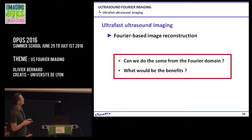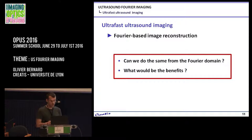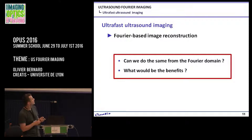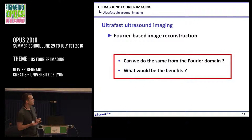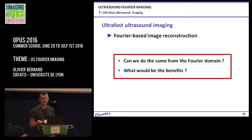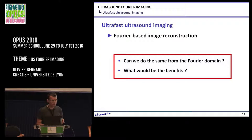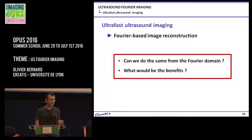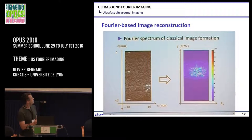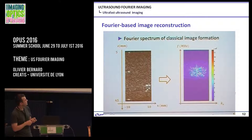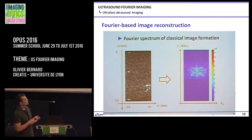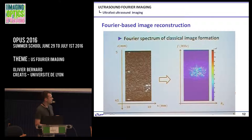The two questions I propose to answer about Fourier-based imaging reconstruction are: first, can we do the same but in the Fourier domain? The answer is yes, more or less. And second, what would be the benefits? The benefit is a potential reduction of computational complexity. If we come back to conventional imaging formation, this is a real acquisition, and you can display the Fourier spectrum of this image.